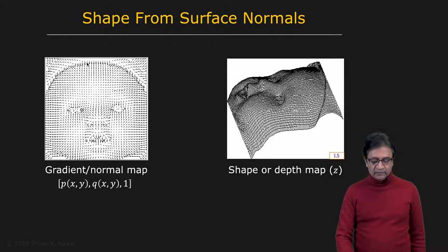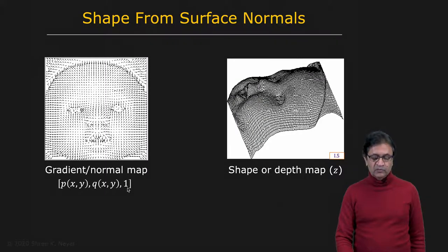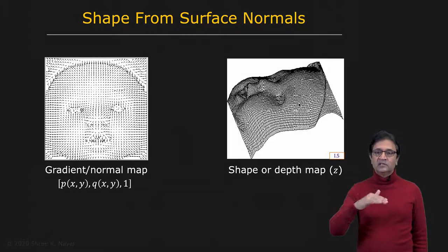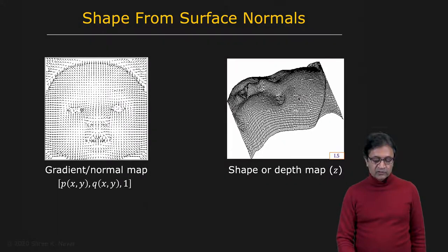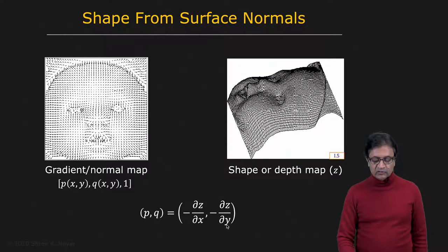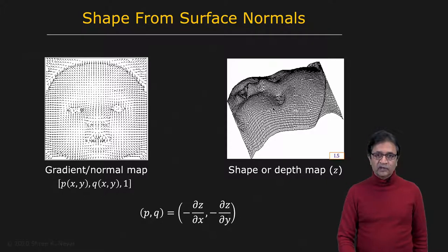Here is a surface normal map measured using photometric stereo. That's p, q, 1 at each point — p, q, 1 is a normal, and you can normalize it with the magnitude to get the unit normal. The object has a height map z(x,y), where z is depth. We know the relationship between z(x,y) and p(x,y), q(x,y): p is the negative derivative of z with respect to x, and q is the negative derivative of z with respect to y. So we know how to go from the depth map z(x,y) to the surface normal map by differentiation.